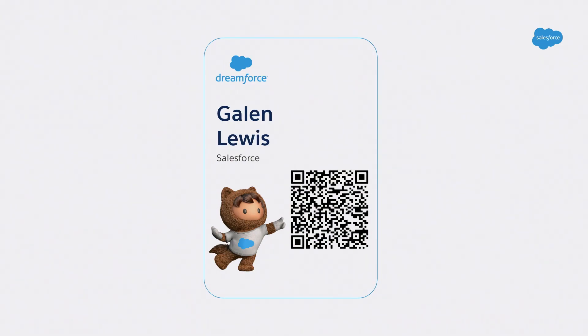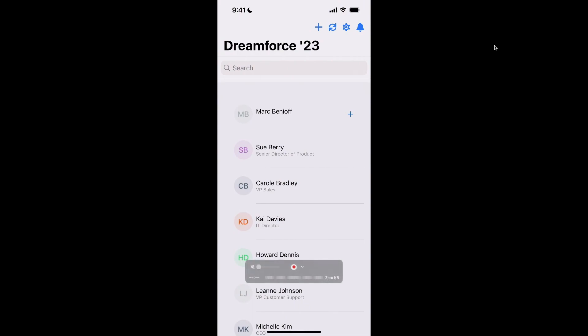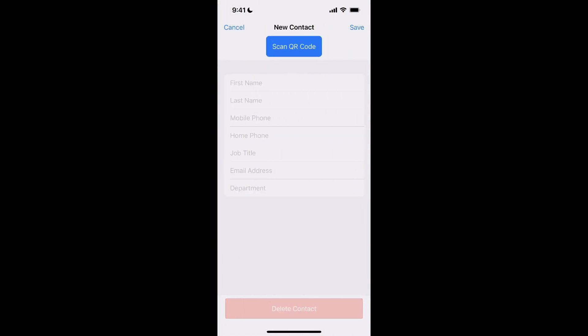I showed you how to add a contact manually by typing into the fields. But what if we want to scan someone's Dreamforce badge and do that automatically? I was able to add a feature that lets us do that. Let's go back to our app, click to add a new contact, and we can see this button I added: Scan QR Code. I actually printed out my very own Dreamforce badge that you can see here. I'm going to open up my iPhone's camera, scan that QR code, and add it to Salesforce. Hope it works.